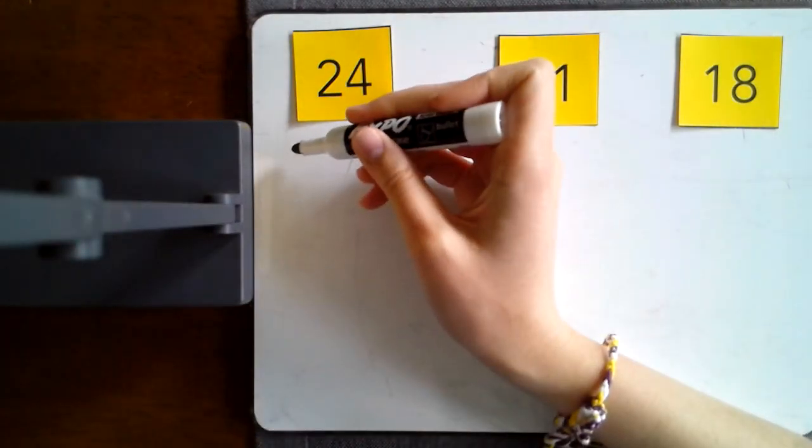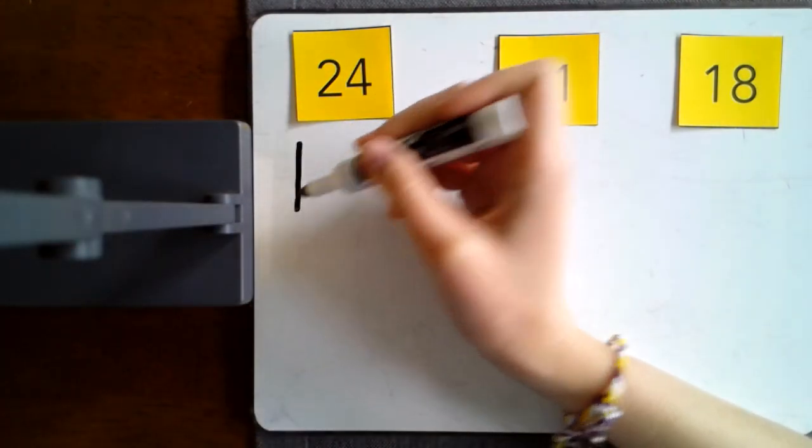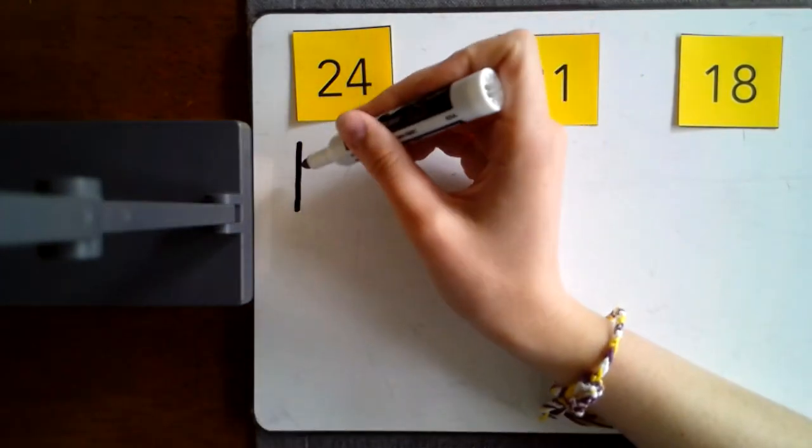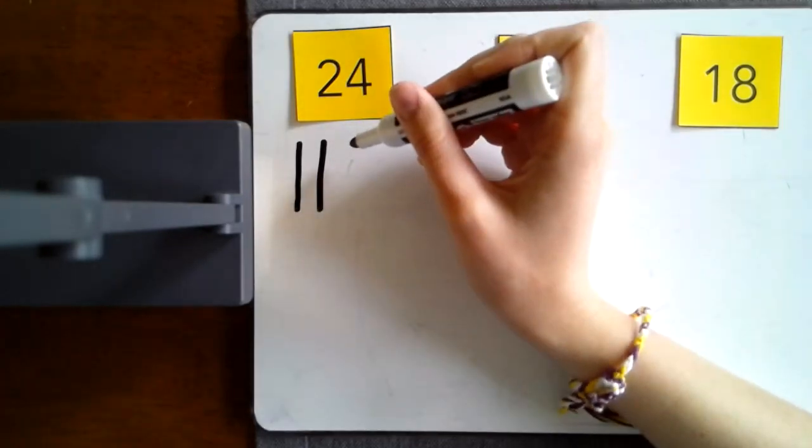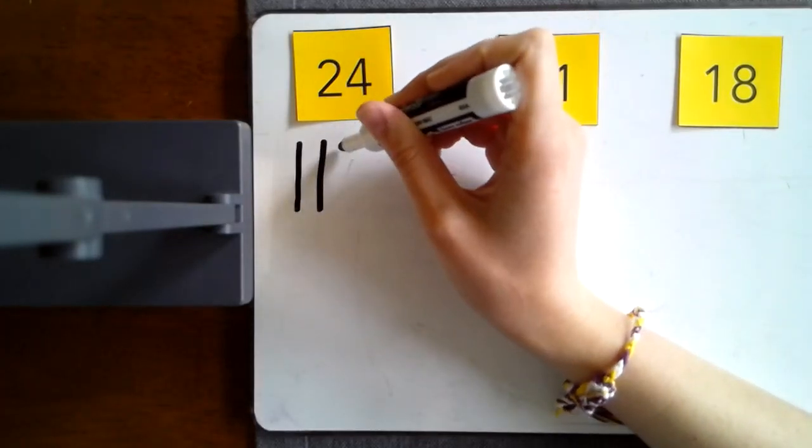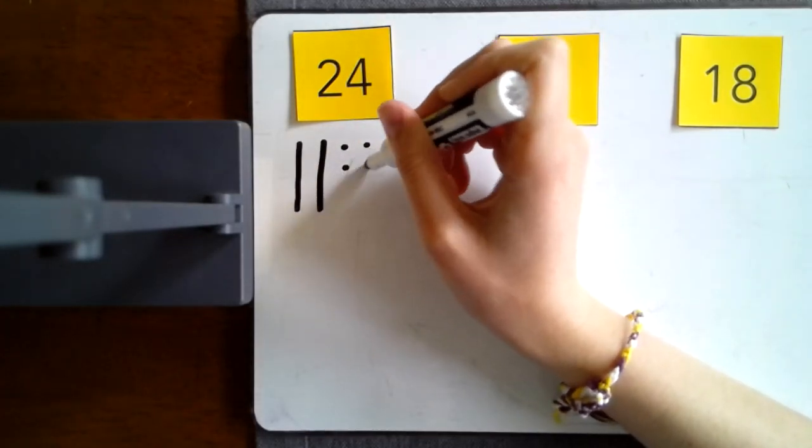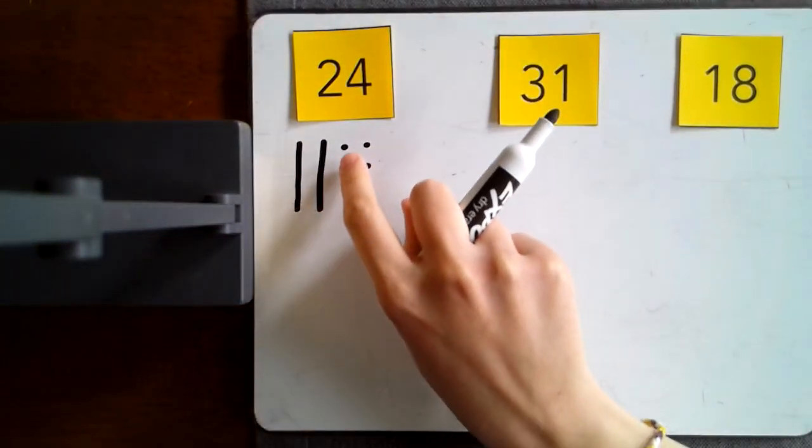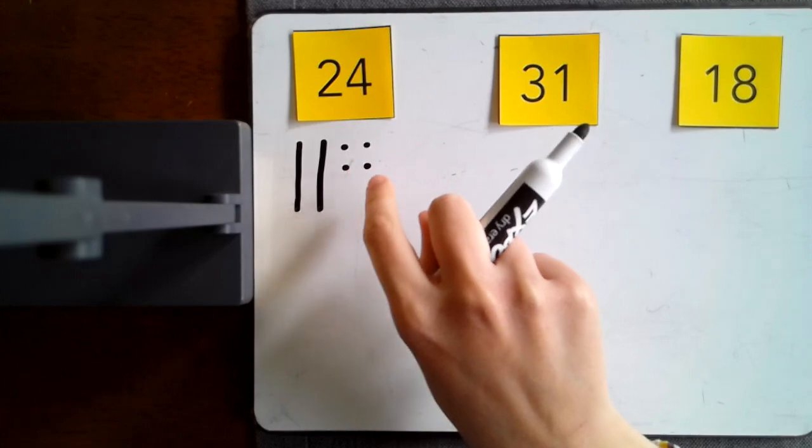I'm gonna draw my tens which we represent with a long line. So that'd be 10, 20 and I'm gonna draw dots for four. One, two, three, four. And then I can check this. So I have 10, 20, 21, 22, 23, 24.